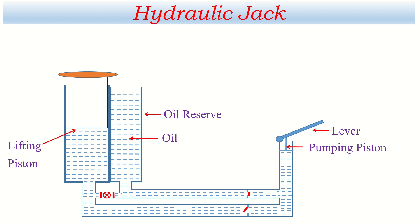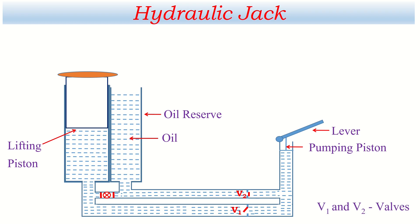There are a few valves which have very important functions. This valve is placed between the lifting piston and pumping piston — let's call it V1. There is another valve placed between the pumping piston and the oil reserve — let's call it V2. In diagrams for examination, V1 and V2 are the valves. There is also another valve called the releasing valve; when it is opened, the level of oil becomes equal in all three sections.